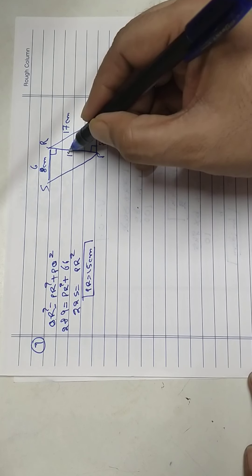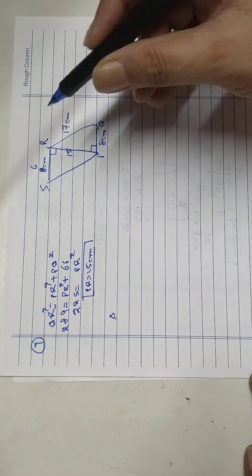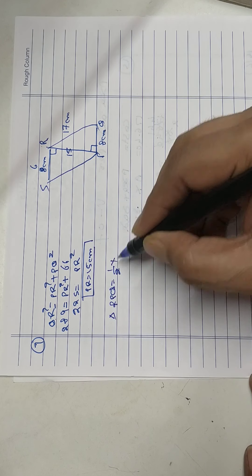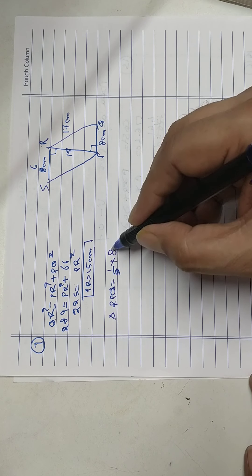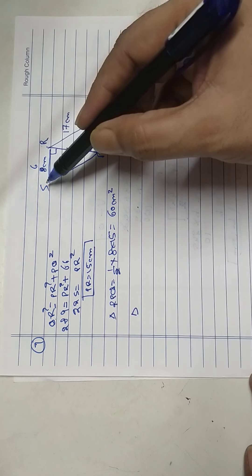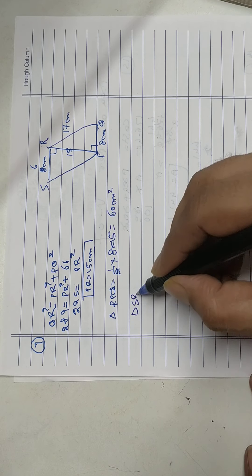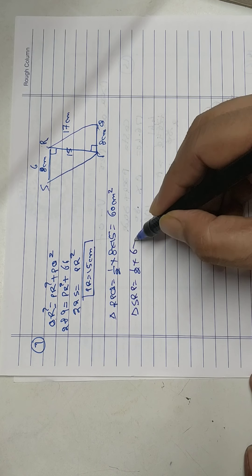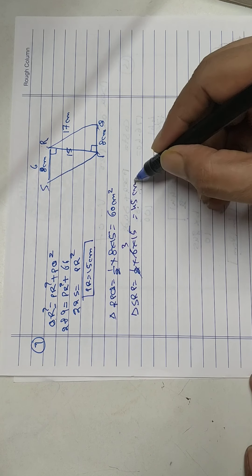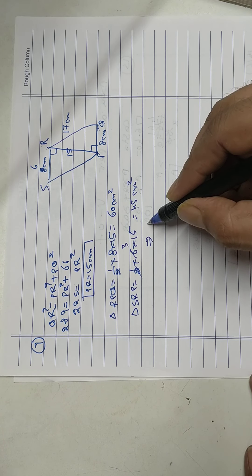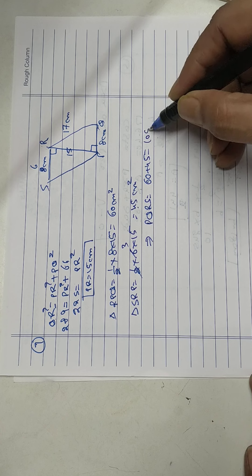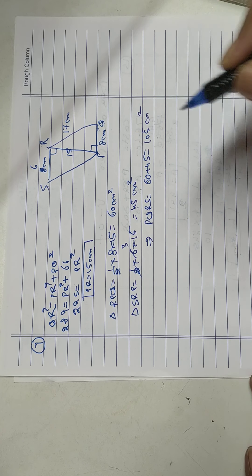Now find area of triangle RPQ. Half into 8 into 15 equals 60 centimeter square. Area of triangle SRP, half into 6 into 15 equals 45. So combined area of PQRS is 60 plus 45, that is 105 centimeter square.